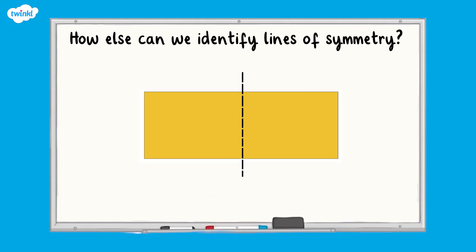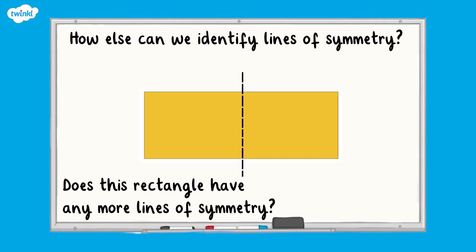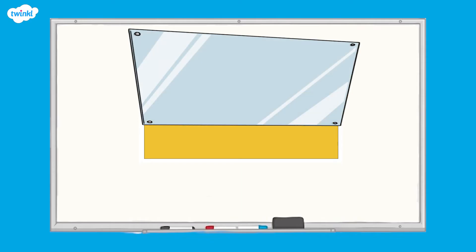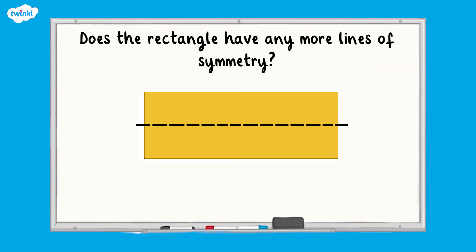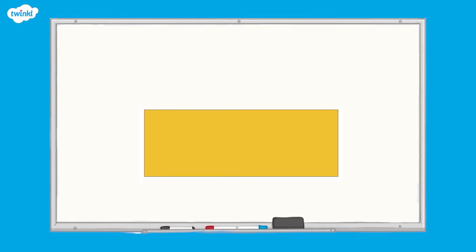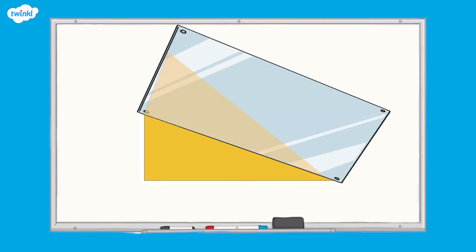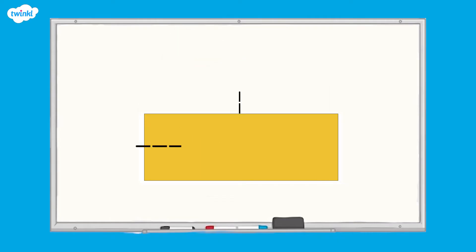We can show this line of symmetry by drawing a vertical mirror line on the shape. Does this rectangle have any more lines of symmetry? When we hold a mirror up to the rectangle horizontally, you can see that the mirror divides the rectangle in half this way, and the reflection is a mirror image of the original rectangle. We can show this line of symmetry by drawing a horizontal mirror line on the shape. If we hold the mirror up to the rectangle diagonally, we can see that the two halves are not identical, so the rectangle does not have any diagonal lines of symmetry. Therefore, the rectangle has two lines of symmetry.